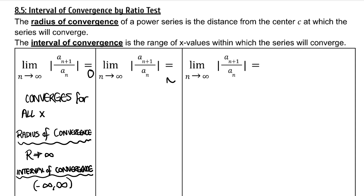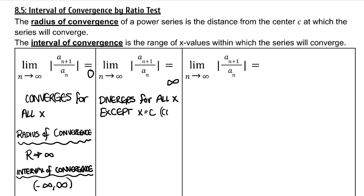Scenario number two: what if your ratio is equal to infinity? Then your series diverges for all x except x equals C. Because when x is equal to C, you will get 0 for everything. Your interval of convergence would simply be the value C, and since this is not a range or an interval of values, your radius would just be 0.